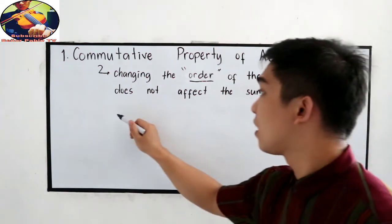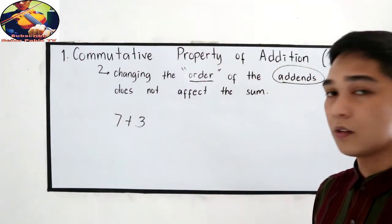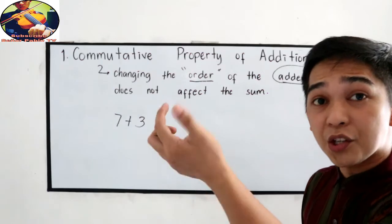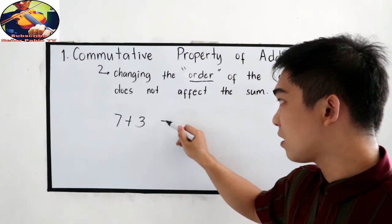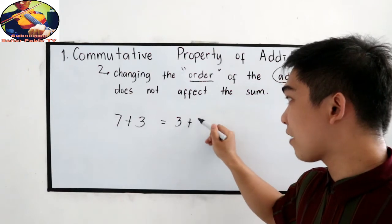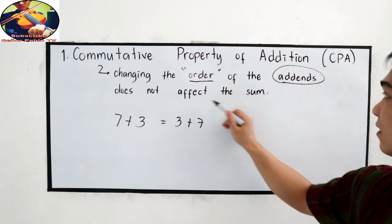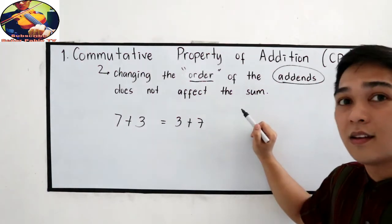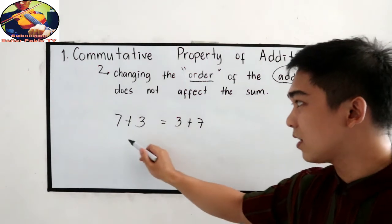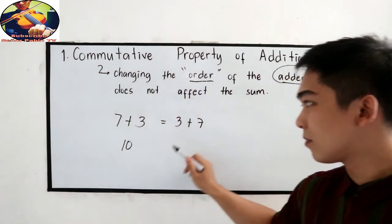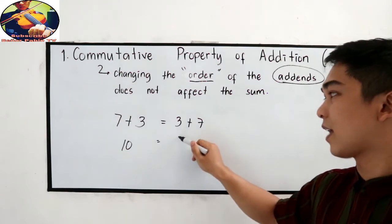Let's say I have 7 plus 3. If I am going to change the order, let's say 3 plus 7, the sum does not change — it will still be the same. So, 7 plus 3 is 10, also equal to 3 plus 7, which is 10.